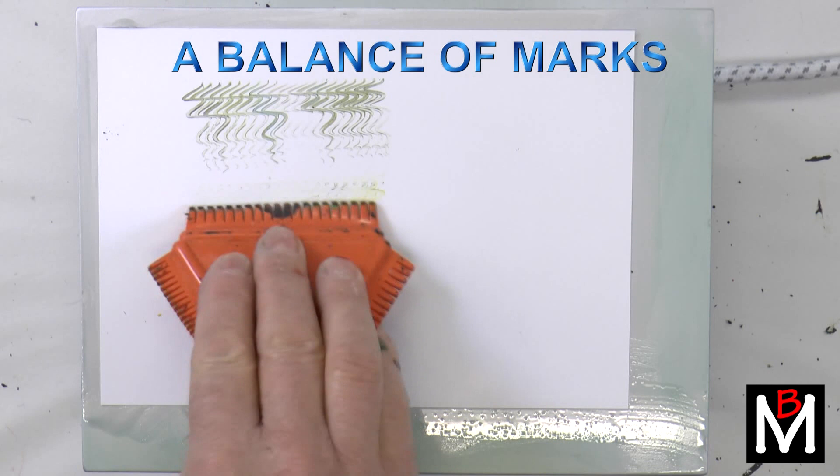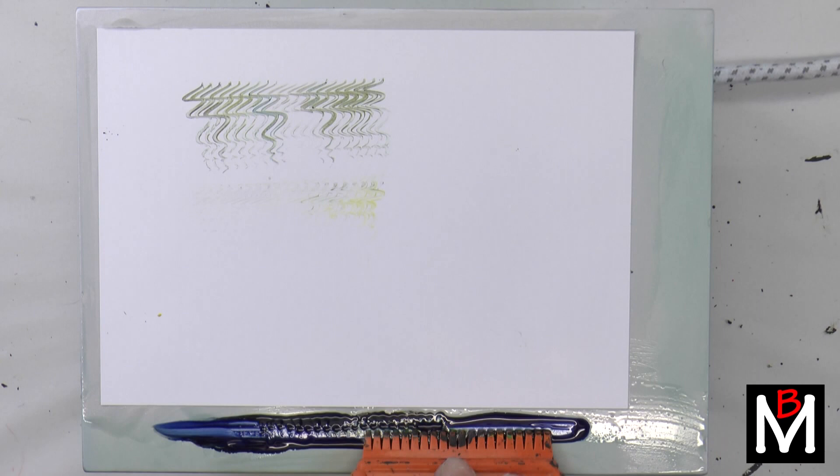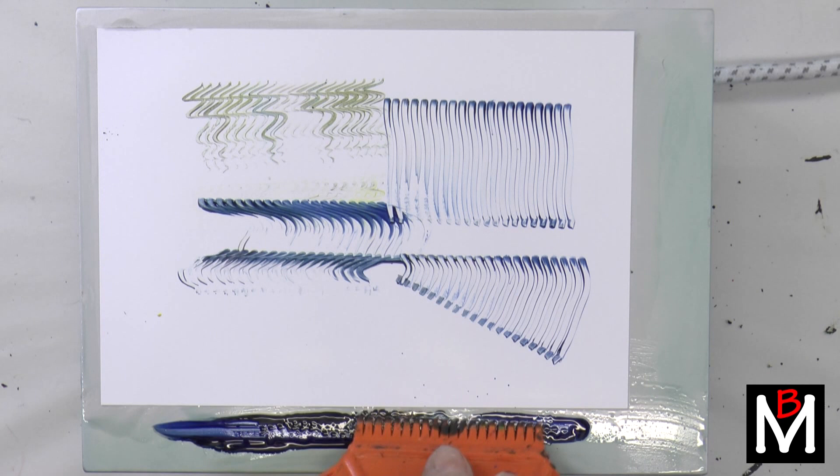A balance of marks on the compact hotplate using A5 white card and a variety of tools. Starting off by putting wax on the actual hotplate and dipping the comb into that, dragging to make marks.